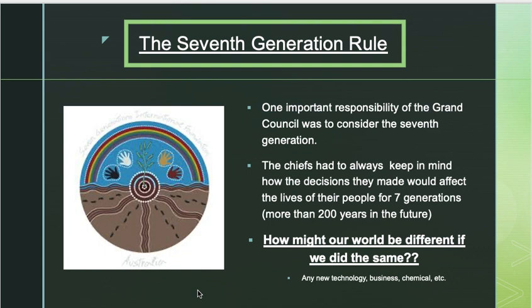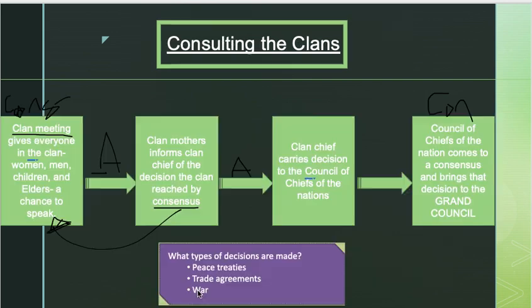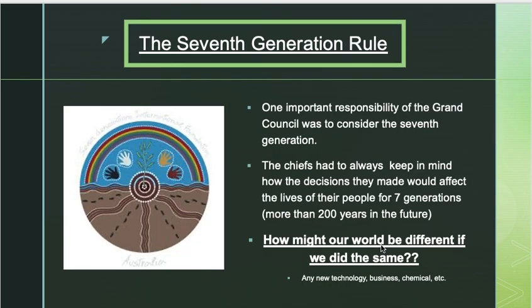The last thing we need to talk about today is the Seventh Generation Rule. It's an aspect of the Great Law of Peace — it's how the Iroquois, or Haudenosaunee people, think about the future when making decisions. One important responsibility of the Grand Council was to consider the seventh generation: the chiefs always had to keep in mind how their decisions would affect the lives of their people for seven generations — roughly 200 years into the future — whether for peace treaties, trade agreements, war, or moving a village.